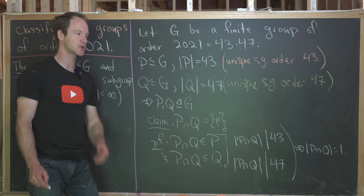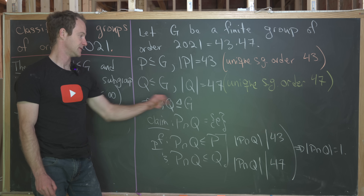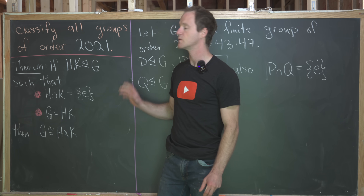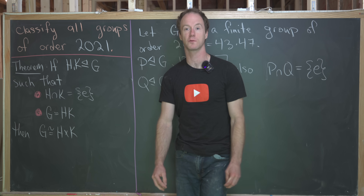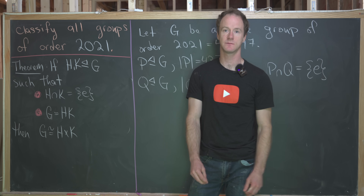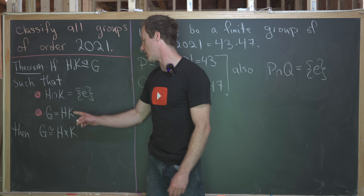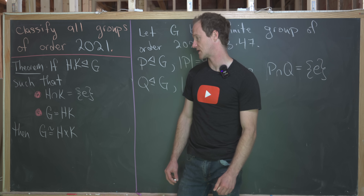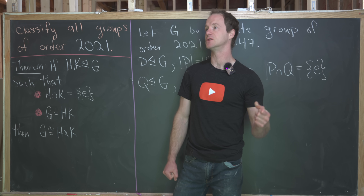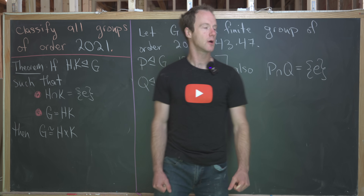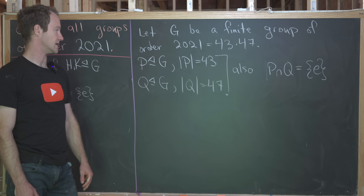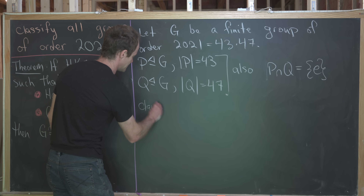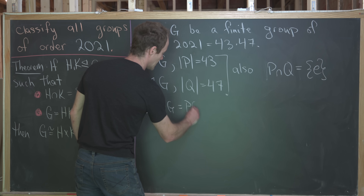We have a nice result about internal direct products: if H and K are both normal subgroups of G, they intersect trivially, and G = HK, then G is isomorphic to H × K. We already have P and Q as normal subgroups of G that intersect trivially. We just need to show that G is actually equal to PQ.